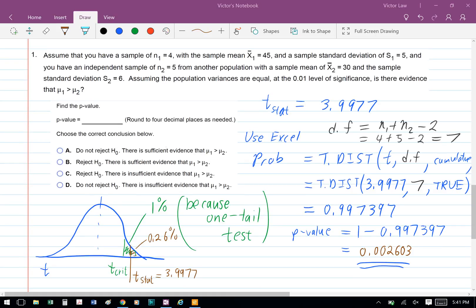Finally, to get the p-value, we do 1 minus 0.997397, so p-value equals to 0.002603.